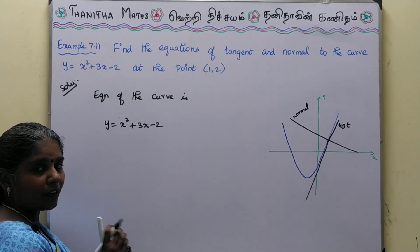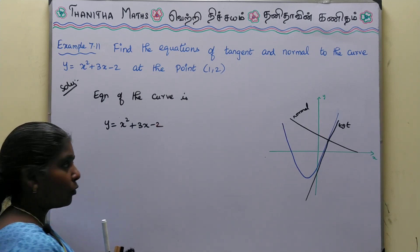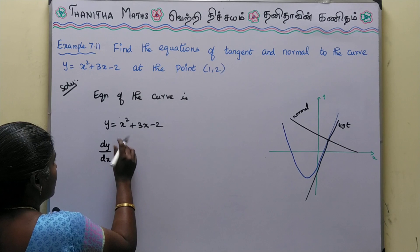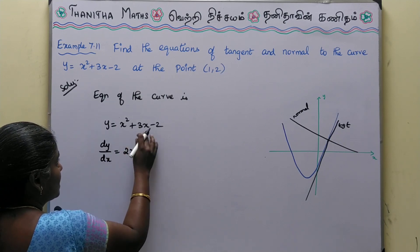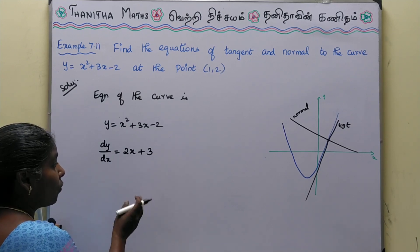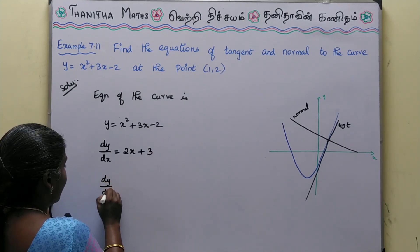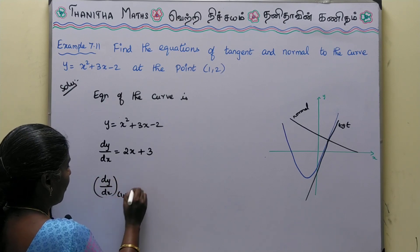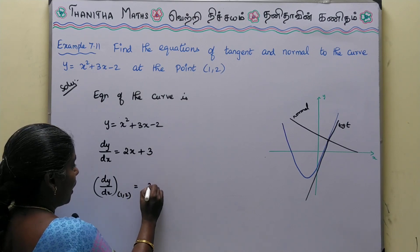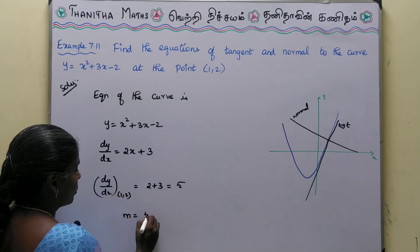Differentiating the curve with respect to x: dy/dx = 2x + 3. The slope at any particular point is given by this derivative. At the point (1, 2), substituting x = 1: dy/dx = 2(1) + 3 = 2 + 3 = 5. So the slope m = 5.